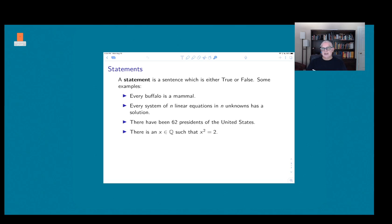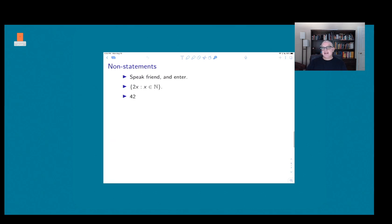So what's an example of what isn't a statement? Here are a few examples: 'Speak friend and enter'—that's a sentence but it's not either true or false, it's not a statement. The second one is a set, the set of even numbers, but again it's not true or false, it just is, so it's not a statement. And 42—even though, as we know from The Hitchhiker's Guide to the Galaxy, 42 is the meaning of life—it's not a true or false thing, it's just a thing, so it's not a statement either.